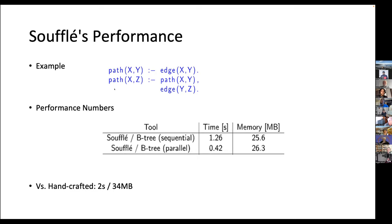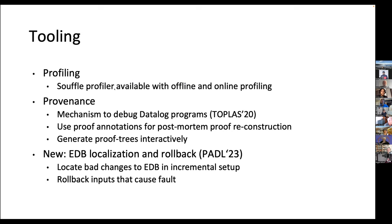The last thing — recently — is a lot of tooling. We have a profiler, but the most interesting feature is provenance: we add proof annotations so developers can figure out where their analysis could be wrong. This really came about through industrial use cases — at Amazon we were using this and finding it hard to debug our static analysis. Recently we've also looked at describing to the user where an error occurred in the EDB and rolling it back for an incremental evaluation setup.